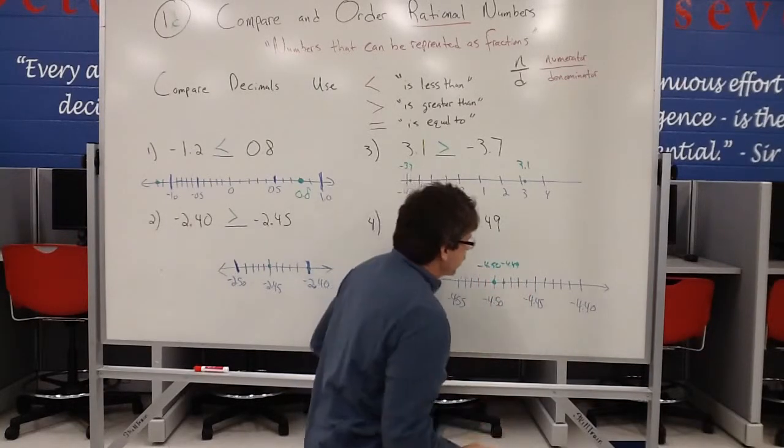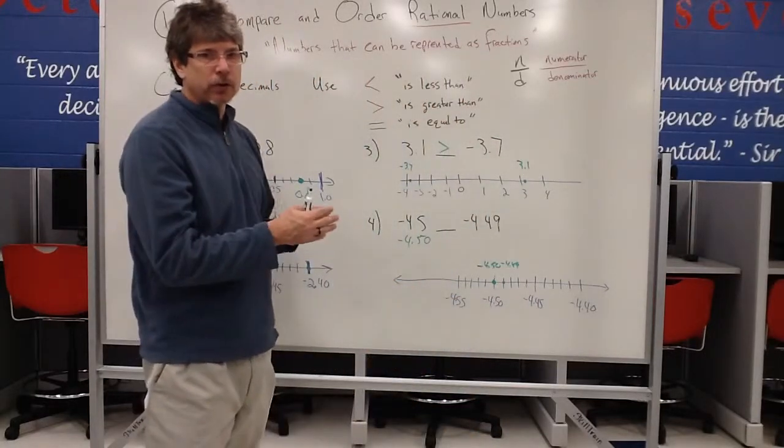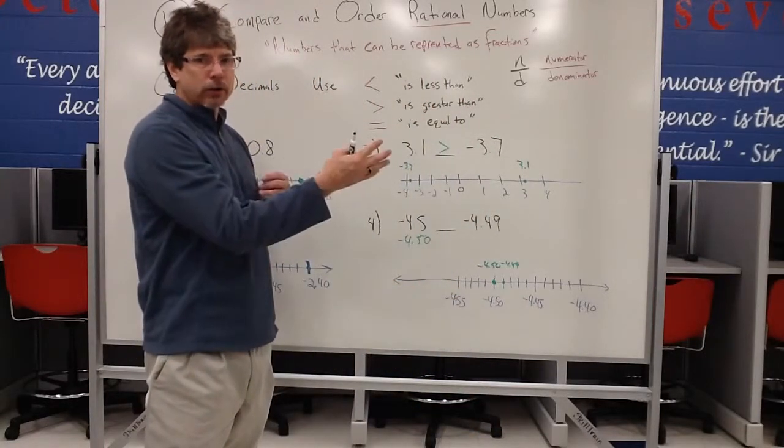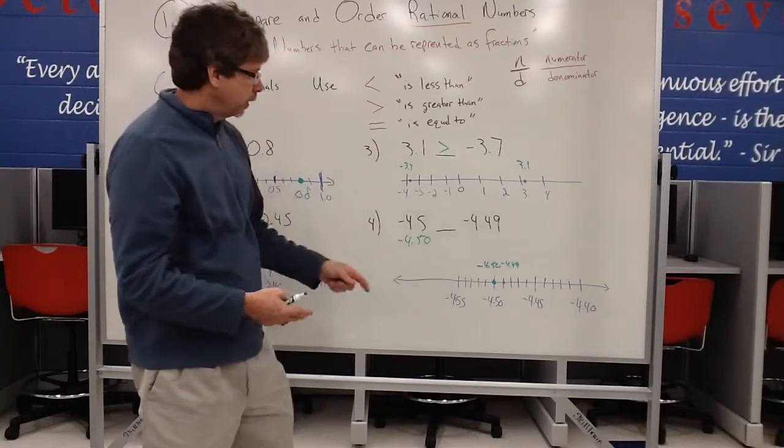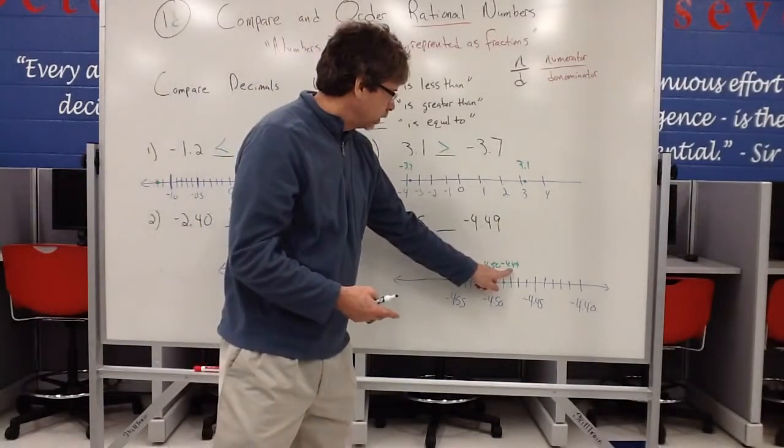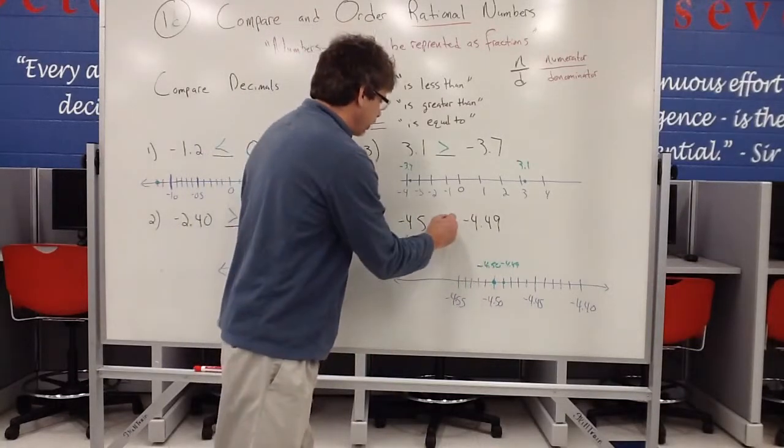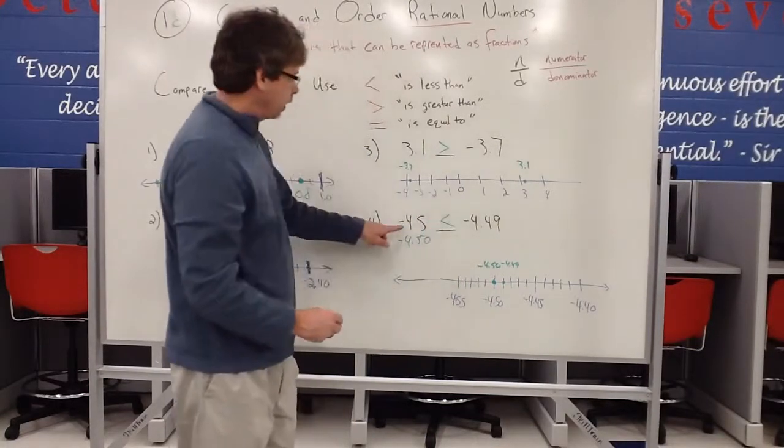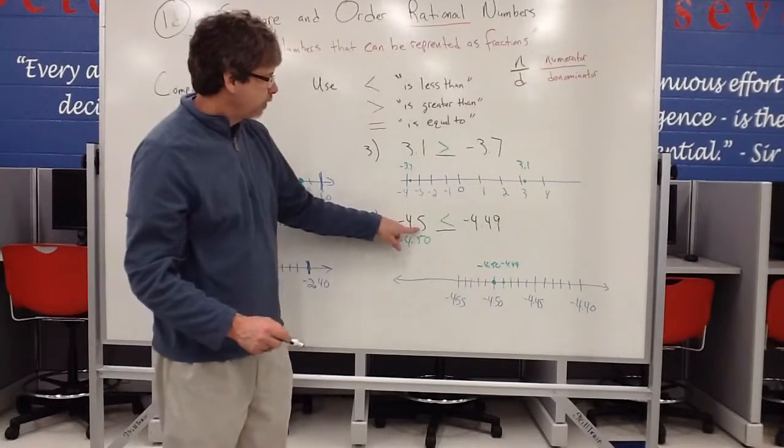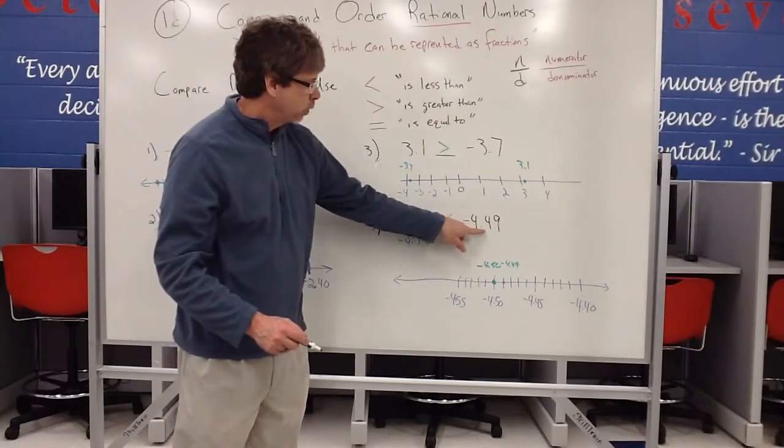And remember when we're comparing decimals, especially negative numbers, the one to the right is always the larger value. So that actually tells me that this negative 4.49 is to the right, so it's actually the greater than one. So actually we would write down then negative 4.5 is less than negative 4.49.